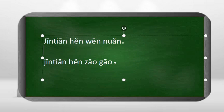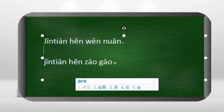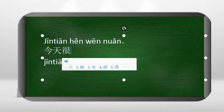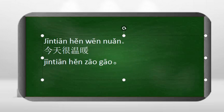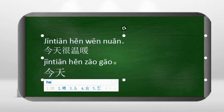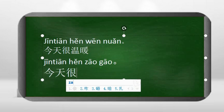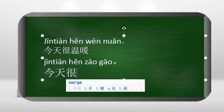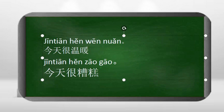It's cloudy today — 今天多云. 今天很温暖 — it's very warm today. 今天很糟糕 — it's very terrible today.